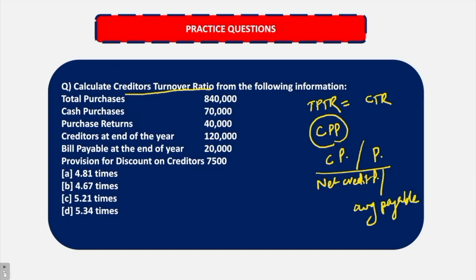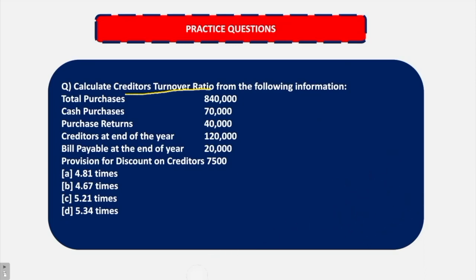Now let's go through all these figures that have been given and then we will try to find out the answer. So you remember that it is CPP. Total purchases are 8,40,000. Cash purchase is 70,000. Purchase return 40,000. Creditors at the end of the year, bill payable at the end of the year. Provision for discount on creditors - so this provision will not be required at all, we can remove this.